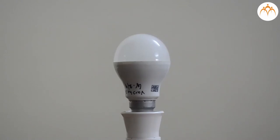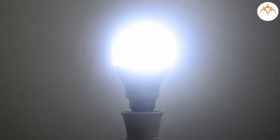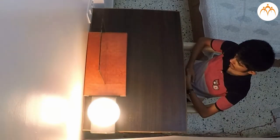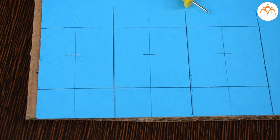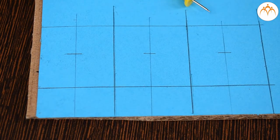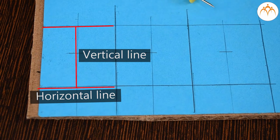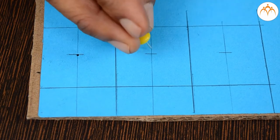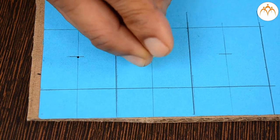We know that light is a form of energy. Without light there will be complete darkness. Let us do some activity to understand more about light. Let us take this card sheet. Let's mark two horizontal lines and one vertical line with the help of a push pin.